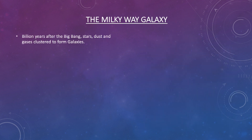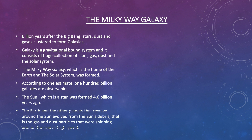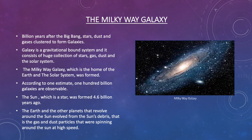Now moving on, let us talk about the Milky Way galaxy. Almost a billion years after the Big Bang, stars, dust and gases clustered to form galaxies. A galaxy is a gravitationally bound system and it consists of a huge collection of stars, gas, dust and solar systems. The Milky Way galaxy, which is home of the Earth and the solar system, was formed billions of years after the Big Bang explosion.